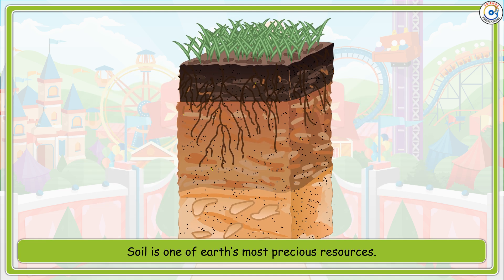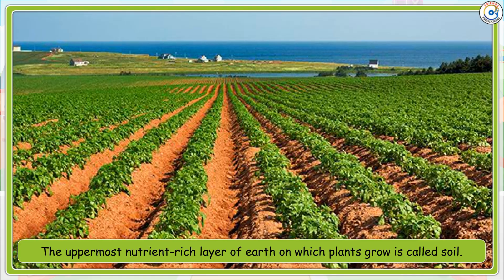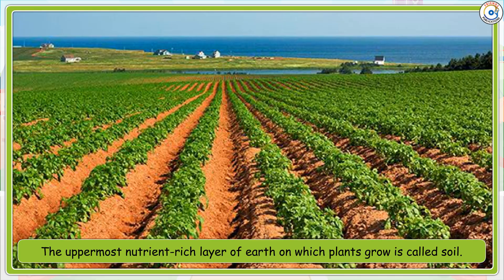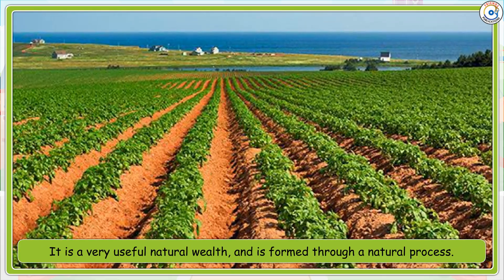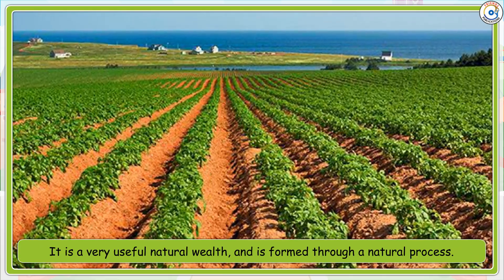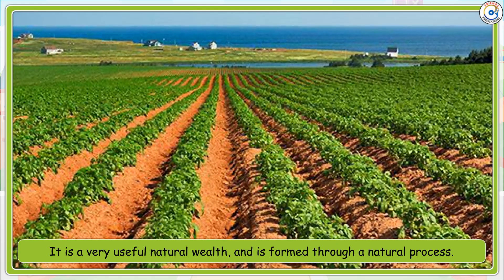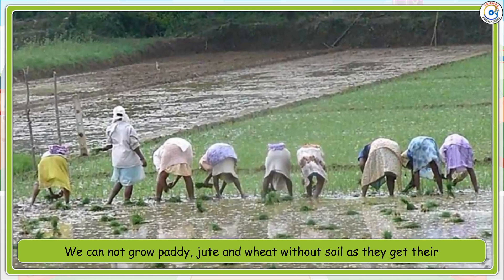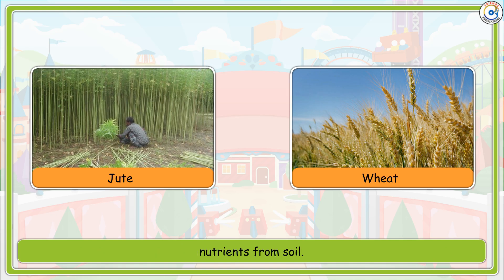Soil is one of earth's most precious resources. The uppermost nutrient-rich layer of earth on which plants grow is called soil. It is a very useful natural wealth and is formed through a natural process. We cannot grow paddy, jute, and wheat without soil as they get their nutrients from soil.